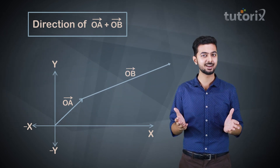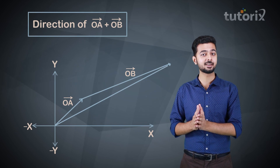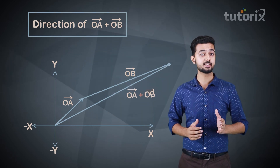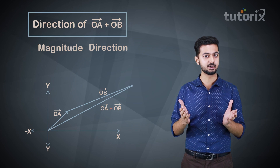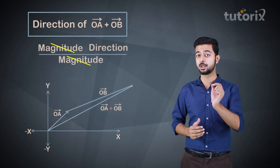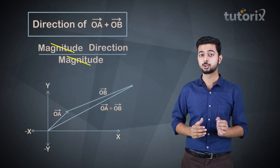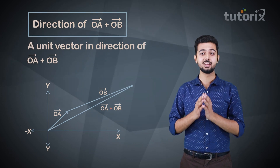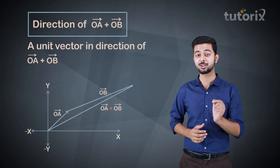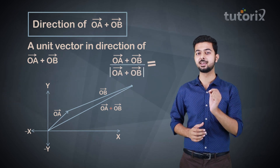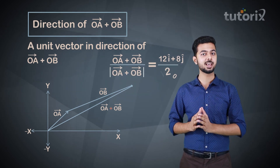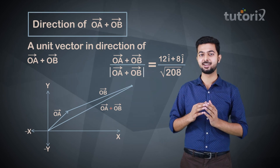A vector has a magnitude and a direction. If we divide the vector by its magnitude, the magnitude becomes 1, giving us a unit vector in the same direction. So the direction of vector OA plus vector OB is (12î + 8ĵ) divided by √208.